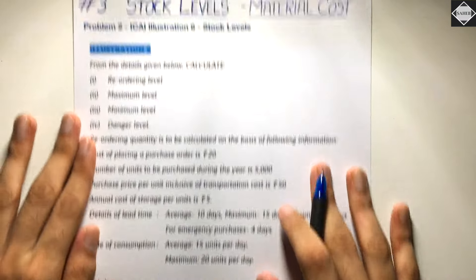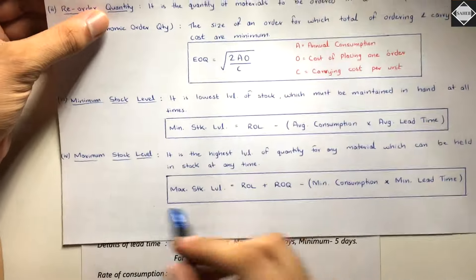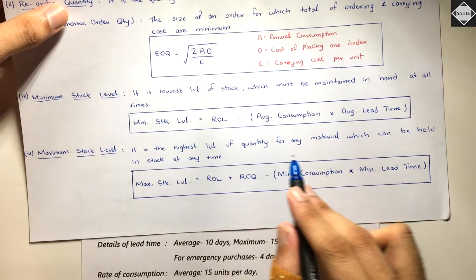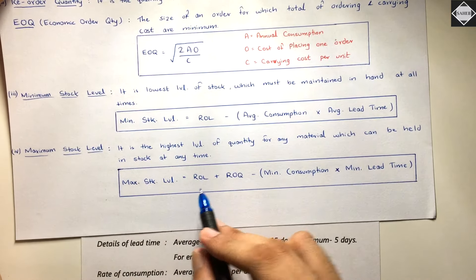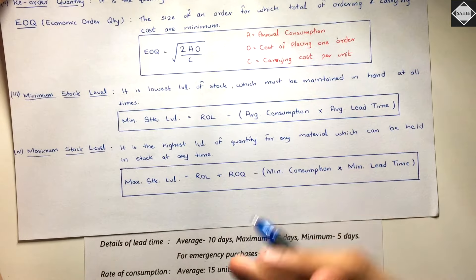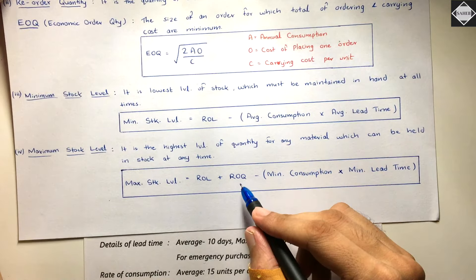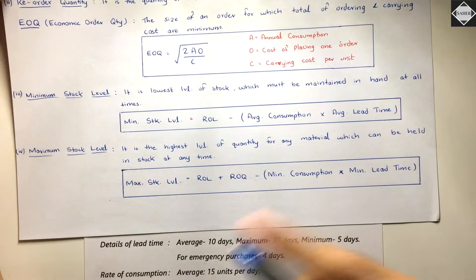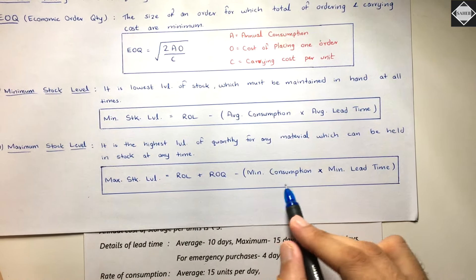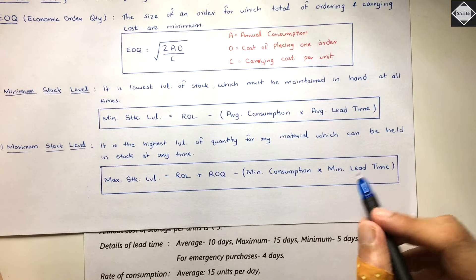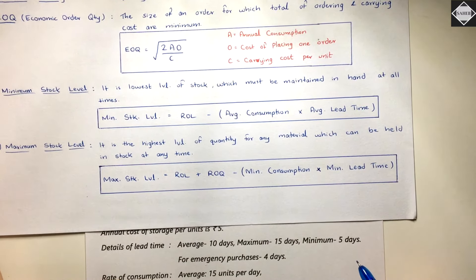Now let's calculate maximum level. Maximum stock level is the highest level of quantity for any material which can be held in stock at any time. The formula is: maximum stock level = reorder level + reorder quantity − (minimum consumption × minimum lead time). Reorder level is 300 units, but reorder quantity (EOQ) is not given — we'll have to calculate it. Minimum consumption is also not given. Minimum lead time is given as 5 days.